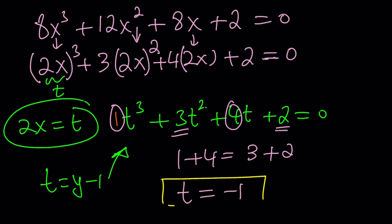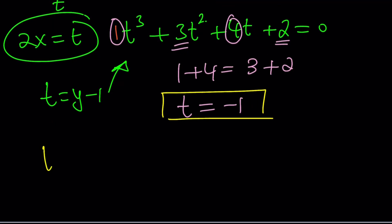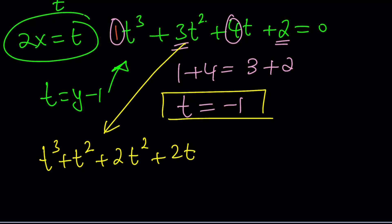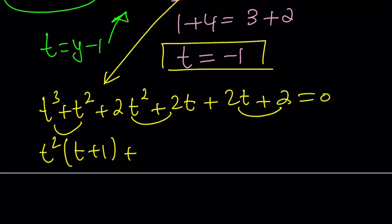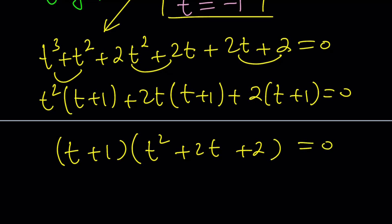We didn't even use trial and error or the rational root theorem — we know T equals negative 1 is a solution, so we can factor it. I'll break it down by grouping: T cubed plus T squared, then 2T squared plus 2T, then 2T plus 2. Taking out T squared gives T plus 1; taking out 2T gives T plus 1; taking out 2 gives T plus 1. So it factors as T plus 1 times T squared plus 2T plus 2 equals 0. T plus 1 was expected, and the remaining quadratic can be solved with the quadratic formula. That's essentially the first method.